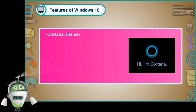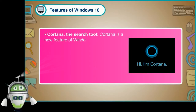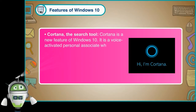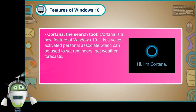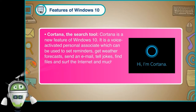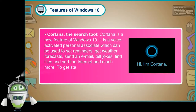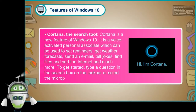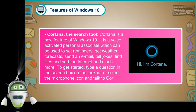Cortana is a new feature of Windows 10. It is a voice-activated personal associate which can be used to set reminders, get weather forecasts, send an email, tell jokes, find files and surf the internet and much more. To get started, type a question in the search box on the taskbar or select the microphone icon and talk to Cortana.